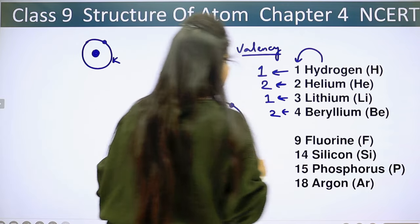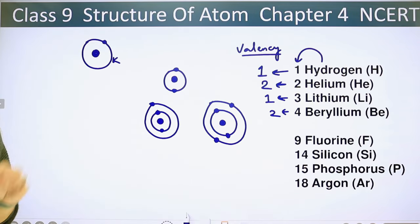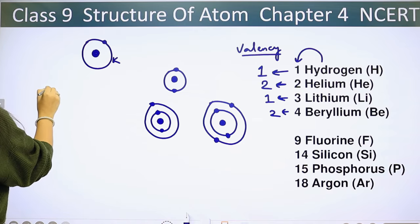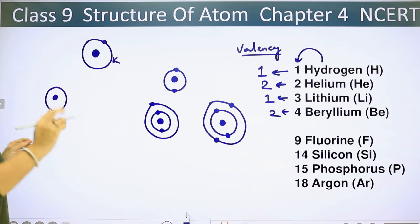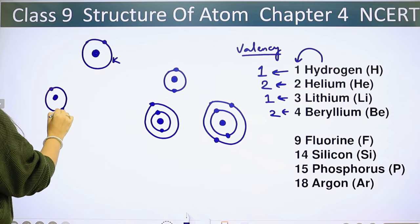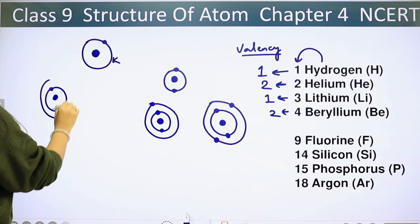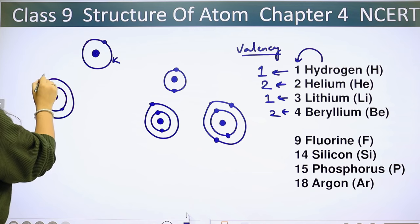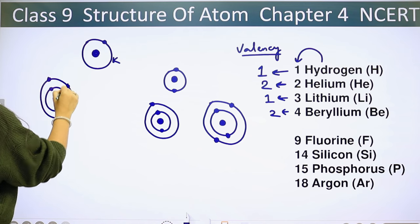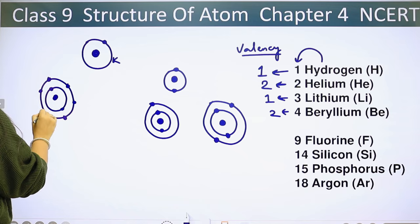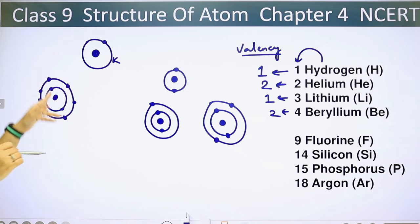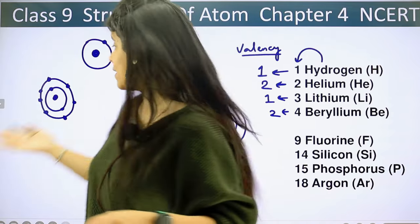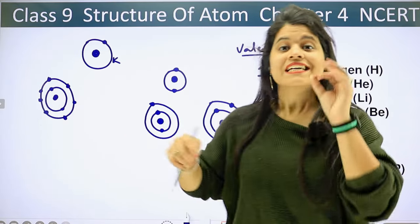Now if we talk about fluorine, the atomic number is 9, meaning 9 electrons. This is the nucleus. The K-shell takes 2 electrons. Then we make the L-shell and fill it with the remaining 7 electrons: 1, 2, 3, 4, 5, 6, 7. So all 9 electrons are arranged. Now in the outermost shell there are 7 electrons.